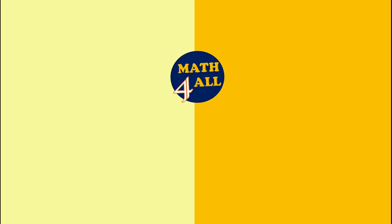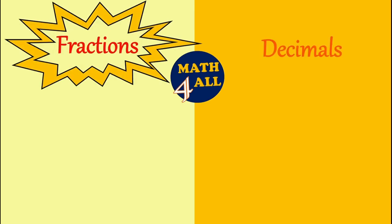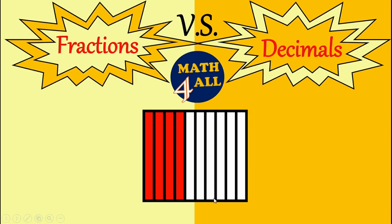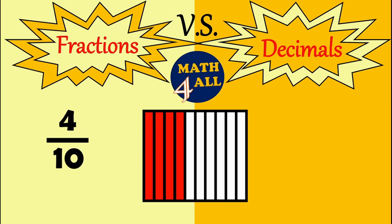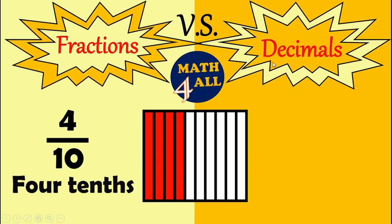Now let's learn the difference between fractions and decimals. Look here — we have one square broken into ten equal parts, and you have just four parts out of ten. If you are going to represent this number as a fraction, you will write it as four over ten. It's so easy — let's read this: it will be four tenths. Now we want to show this number as a decimal.